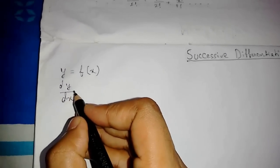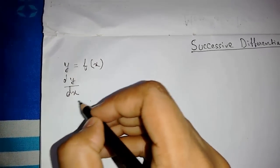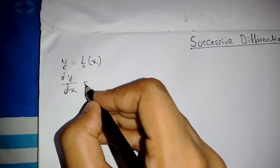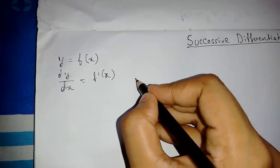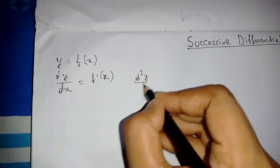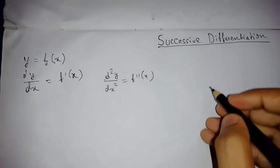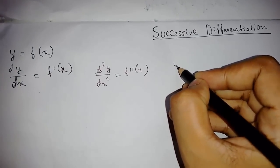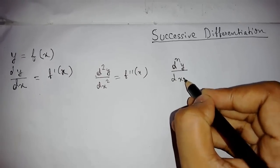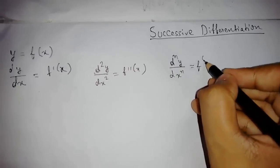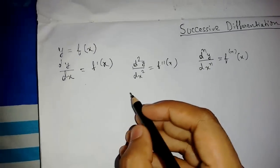Suppose we have function y equals to f(x). What we will basically be doing is calculating the differentiation of this. So this will be dy/dx equals to f'(x). Now if we calculate the second order differentiation, d²y/dx², it will be f''(x). So what we are basically interested in is calculating dⁿy/dxⁿ, which will be fⁿ(x). So we have to learn about this.